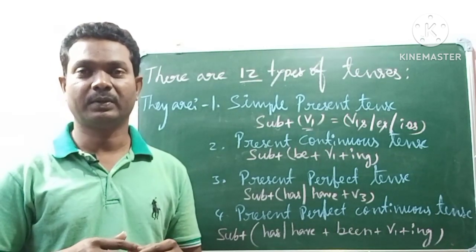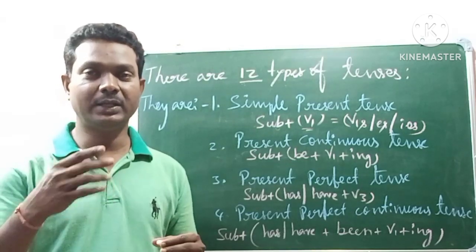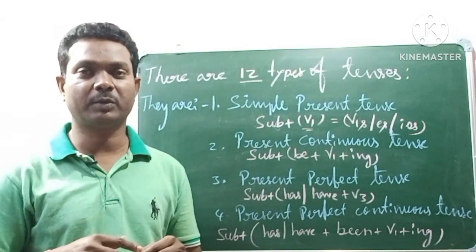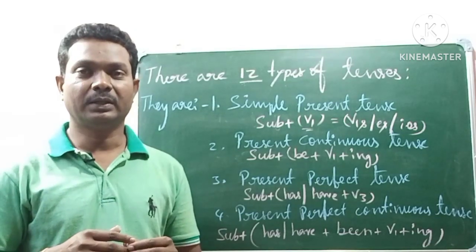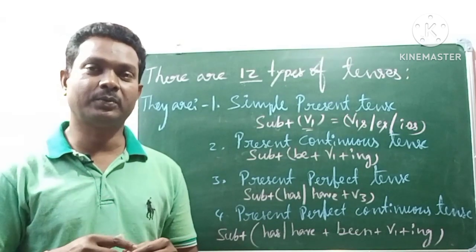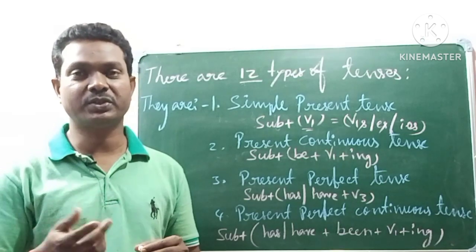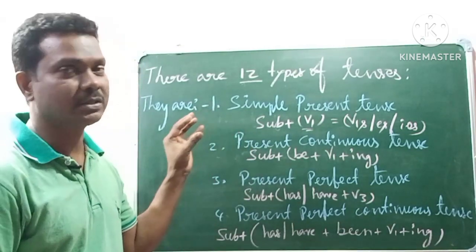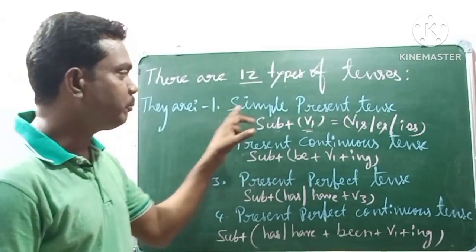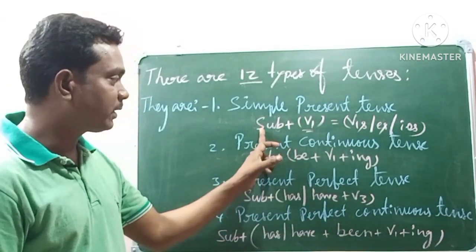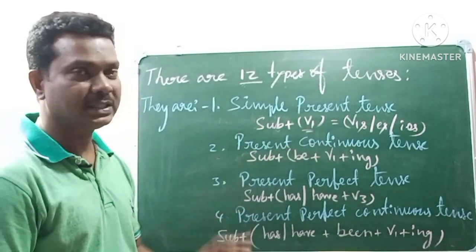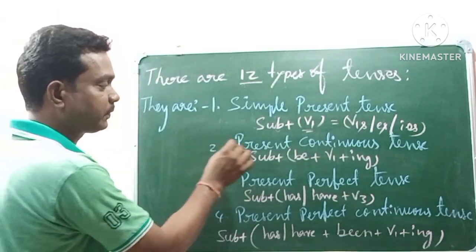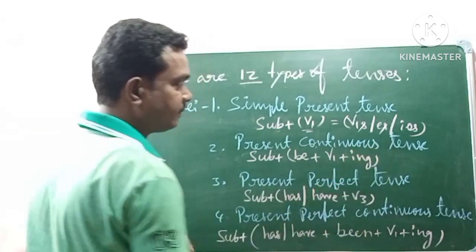Simple present tense is used for regular habits, daily routines, universal truths, universal facts, and scientific facts. That is the usage of simple present tense. In simple present tense, after the subject we write V1. That is called simple present tense.